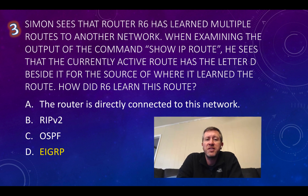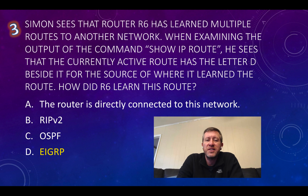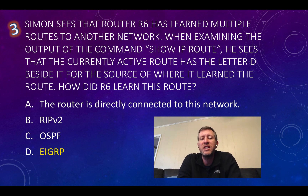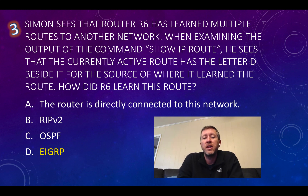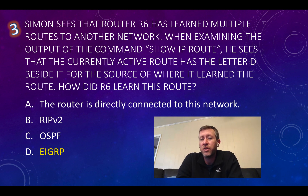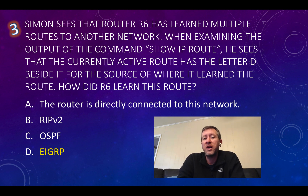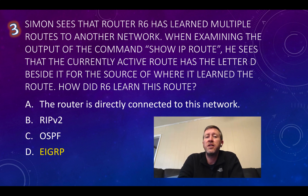Question number three: Simon sees that router R6 has learned multiple routes to another network. When examining the output of the command 'show ip route', he sees that the currently active route has the letter D beside it for the source. How did R6 learn this route? When looking at a routing table via 'show ip route', it shows O for OSPF and R for RIP — but for EIGRP it actually shows a D. So the D in this example means the route was learned via EIGRP.